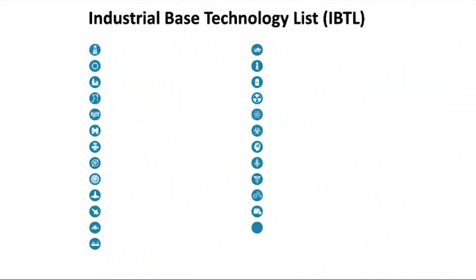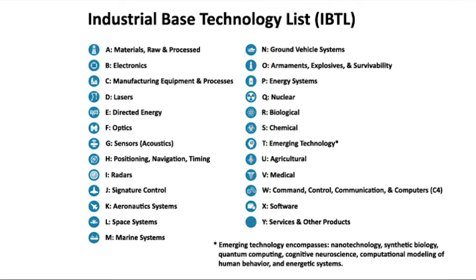The Industrial Based Technology List, or IBTL, is a broad framework of 25 categories to delineate in very broad terms the technology or services worked on or provided by cleared industry. When ascertainable, IBTL categories targeted in an SCR are annotated, enabling us to build a better picture of what technologies or services are being targeted and reported upon.